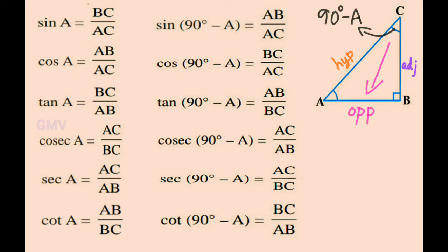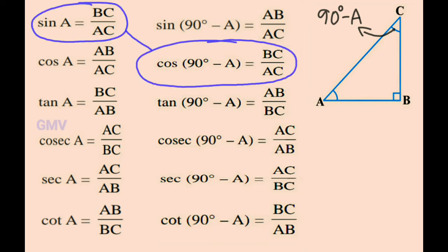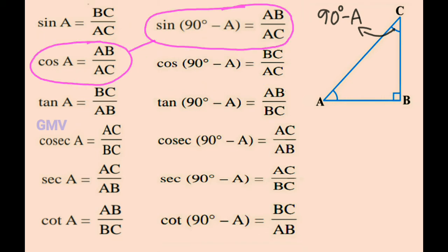Now compare the trigonometric ratios with respect to angle A and with respect to angle 90 degrees minus A. Observe that sin A and cos(90° − A) are equal — that is BC by AC. Hence sin A is equal to cos(90° − A). The trigonometric ratios of cos A and sin(90° − A) are equal — that is AB by AC. Hence cos A is equal to sin(90° − A).